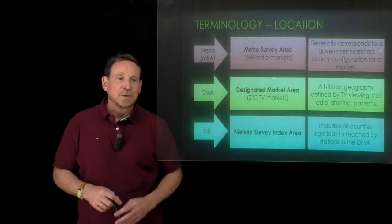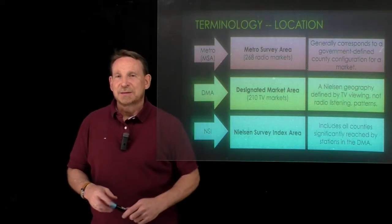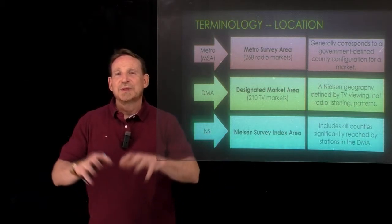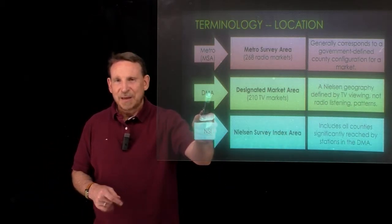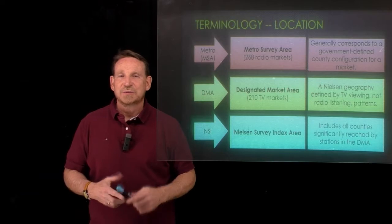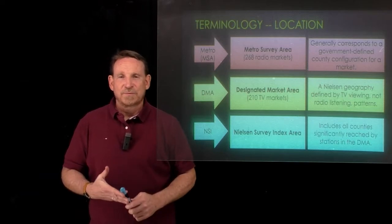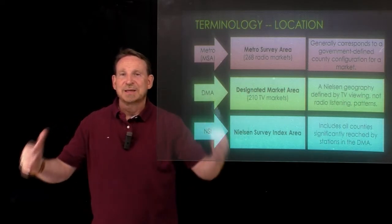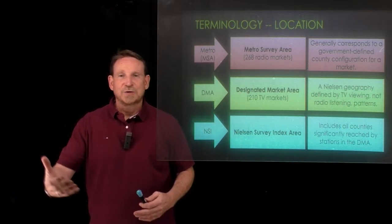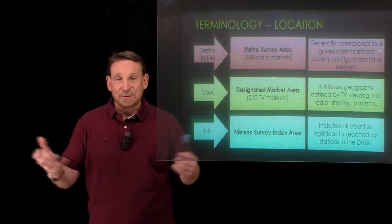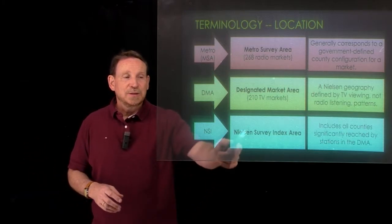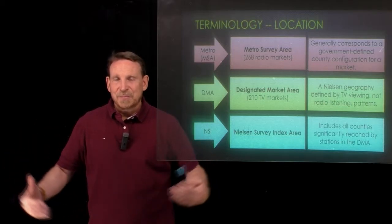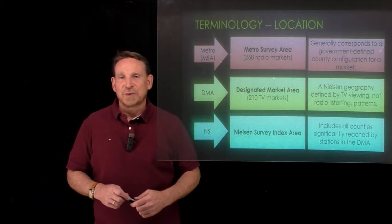And then finally what we want to talk about is the NSI. This is the Nielsen survey index area. And what they're doing here is reaching beyond the DMA. So the DMA is good, but some of those signals, whether it's from a cable outlet or from a broadcast station, are going outside of the DMA designation. And people are watching those programs and watching those services. So the Nielsen survey index lets stations know about that reach so they can get a bigger picture of their population they're reaching.